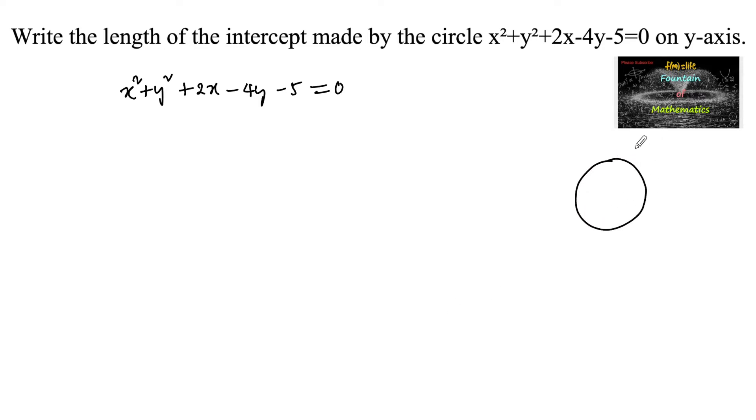There is a circle which cuts the y-axis. Let us consider two points, A and B. Then AB is the y-axis vertical line. So AB is called the intercept; the length of the intercept we need to find is the length AB.